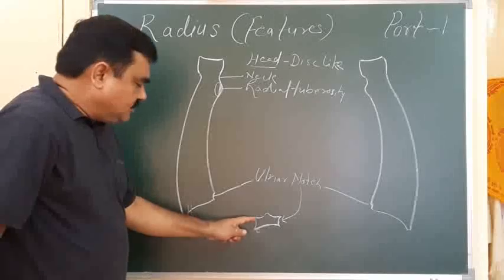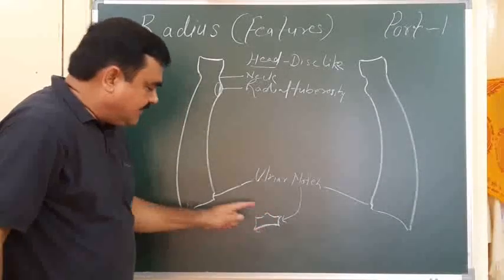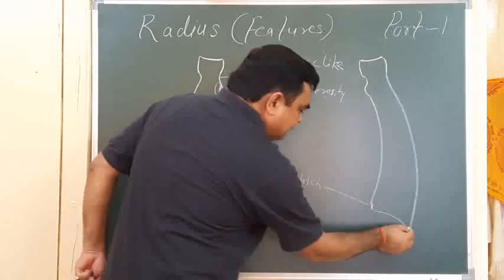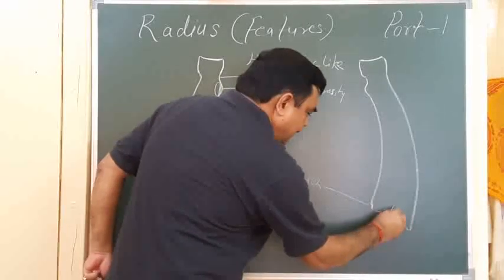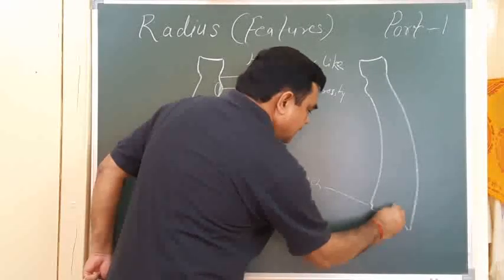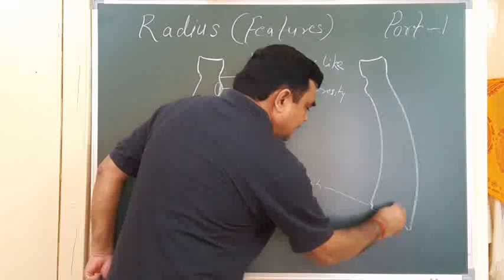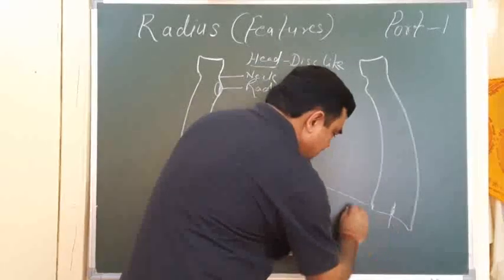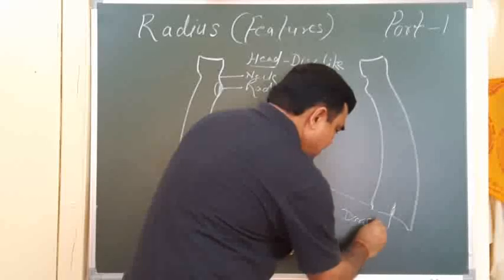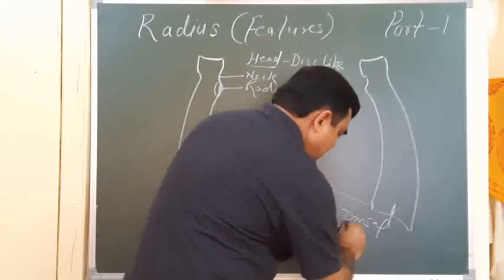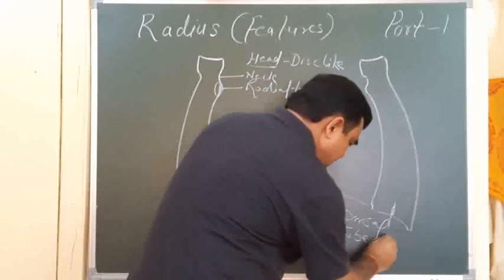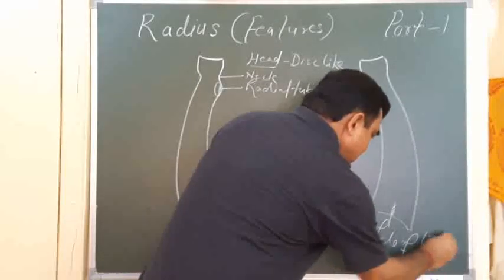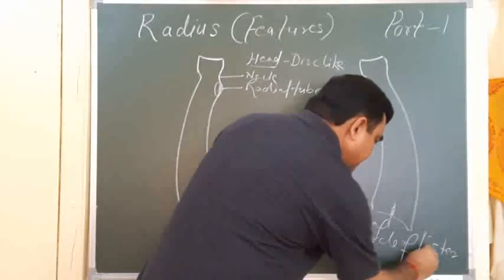This is the posterior surface. On the posterior surface, one tubercle is present — this is the dorsal tubercle of Lister.